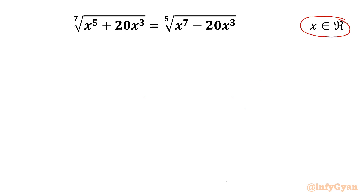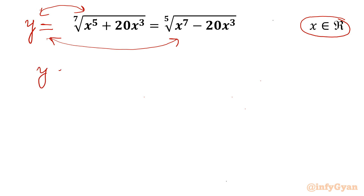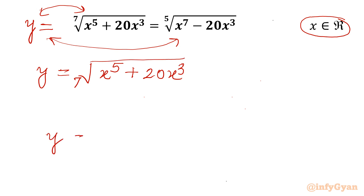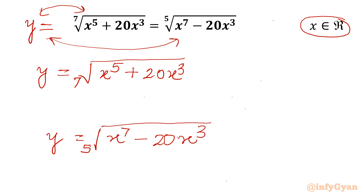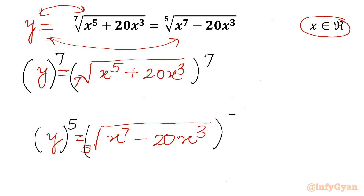Let us get started by considering the entire equation equal to y. From here I can frame two equations — one with this side and another with this combination. So let me write here: y equal to 7th root of x⁵ plus 20x³. This is our first equality. And second: y equal to 5th root of x⁷ minus 20x³. Now I will be considering the whole raised to power 7 on the first and power 5 on the second, as we have 7th and 5th root on the RHS.